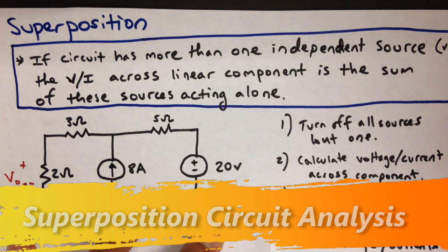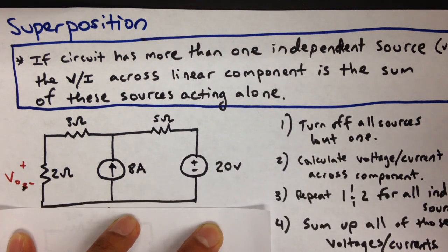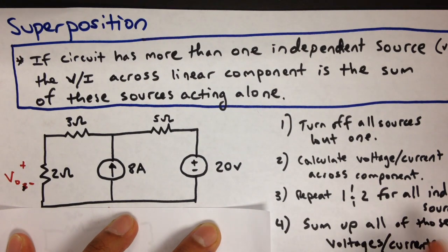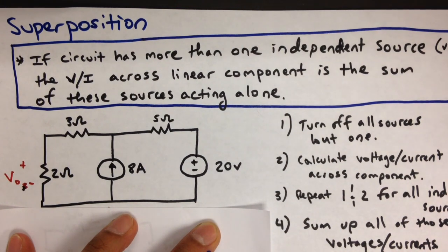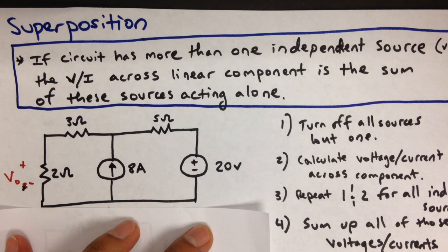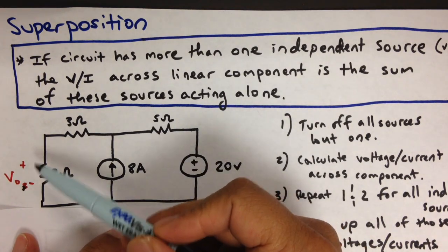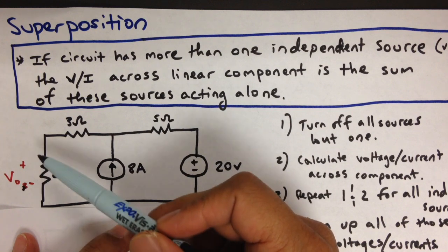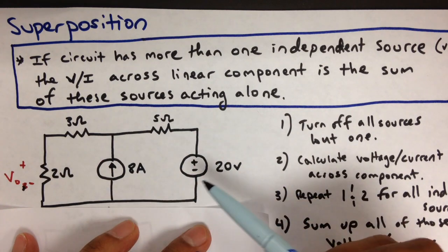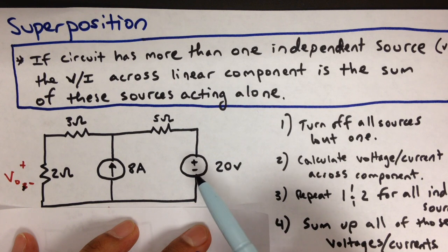Hey everyone, so I thought I'd do a superposition circuit analysis problem. Now the term superposition might sound a little scary, I know it did for me when I was a young engineering undergraduate, but superposition is really a simple idea. You usually use that idea when you're analyzing the voltage or current across some sort of linear component in a circuit where you have more than one independent power source.